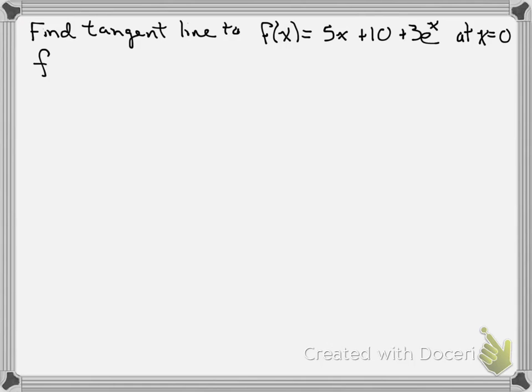First, let's find the point that it goes through. That means we need to calculate f(0). So we're going to plug 0 into our function: 5 times 0 plus 10 plus 3 times e^0. Well, 5 times 0 is 0, e^0 is 1, so we get 10 plus 3, or 13.